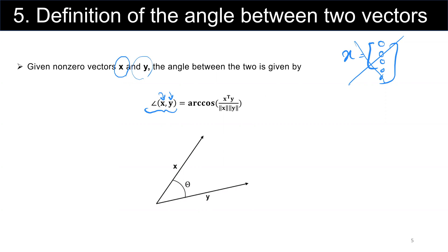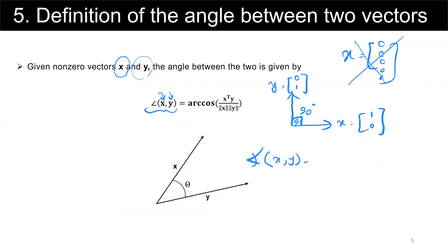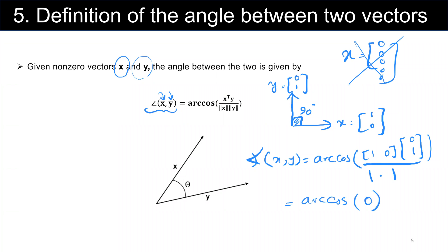Let's look at a special example. Let vector y equal (0, 1) and vector x equal (1, 0). The angle between these two vectors is 90 degrees. The angle between x and y equals arccos of (x transpose [1,0] multiplied by y [0,1]) divided by the norm of x, which is 1, and the norm of y, which is 1. This gives arccos(0), which equals 90 degrees. This is the special case of two vectors that are perpendicular.